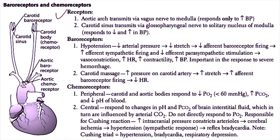These baroreceptors respond to both decreases and increases in blood pressure. During periods of hypotension, there is a decreased mean arterial pressure, which causes a decreased amount of stretch on these baroreceptors — nerve clusters inside the wall of the artery. This decreased stretch leads to decreased afferent baroreceptor firing, which then increases efferent sympathetic firing from the CNS to the heart and blood vessels, and causes a decrease in efferent parasympathetic stimulation.